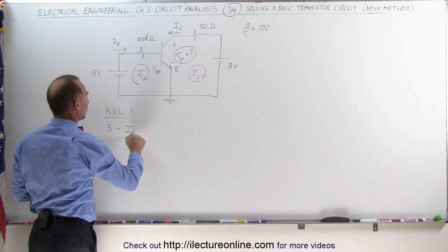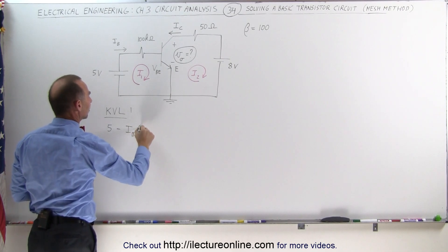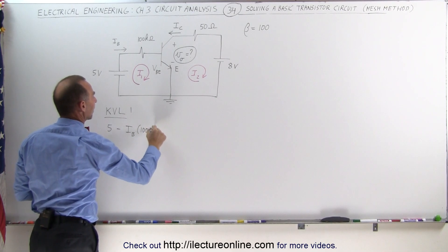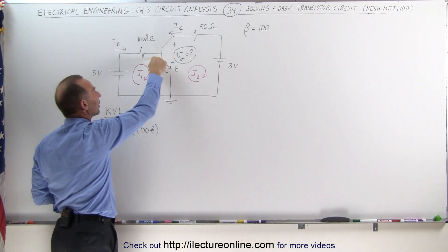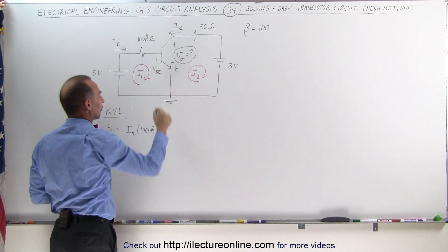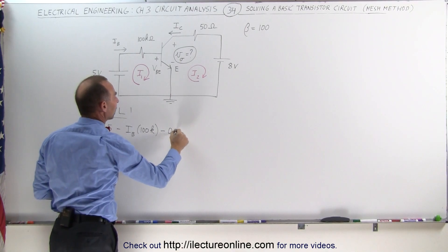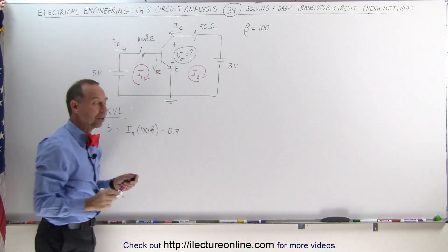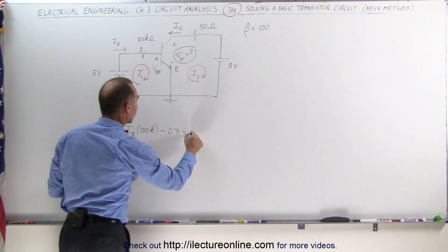So minus the current I sub B times 100k ohms, and then we have a voltage drop from there to there. This is plus, this is minus, the voltage drop of minus 0.7 volts to get back to the point where we started. So that should add up to zero.